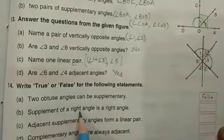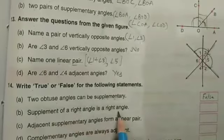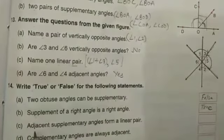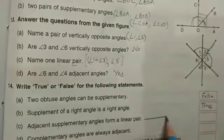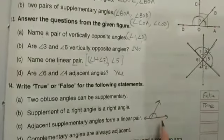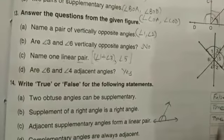Supplement of a right angle. Means if I subtract 90 from 180, I should get 90. Yes, so this is true. Adjacent supplementary angles form a linear pair. Yes, let us see. These are supplementary and adjacent both, and they are forming a linear pair. So this is also true.